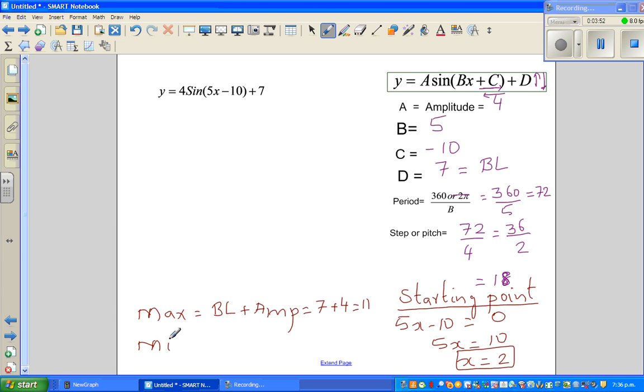And your minimum is baseline minus amplitude. This is very logical. You can see my previous videos to understand this. So this is a formula. You can remember this as a formula.